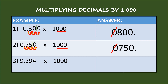In Example 3: 9 and 394 thousandths times 1,000. The multiplier 1,000 has three zeros, so move the decimal point in the multiplicand three places to the right and put the decimal point. So the answer is 9,394.